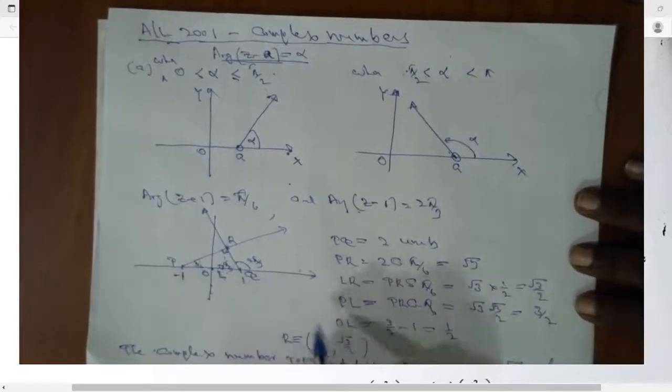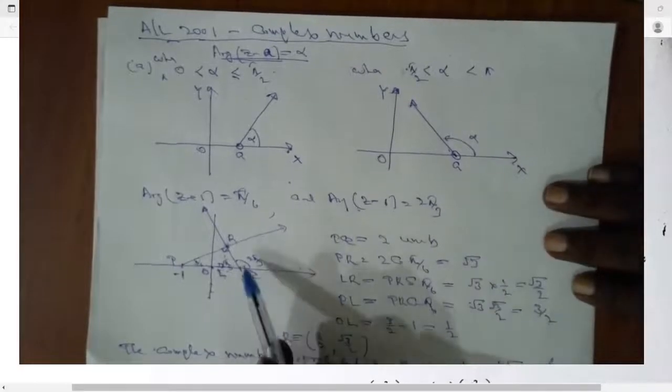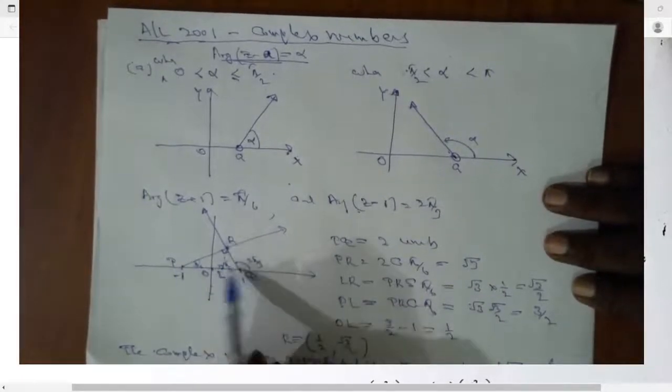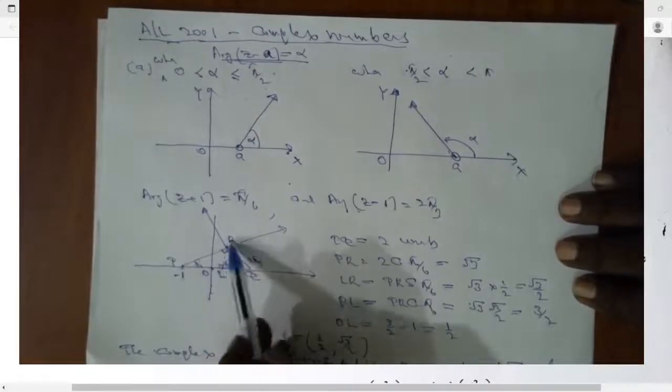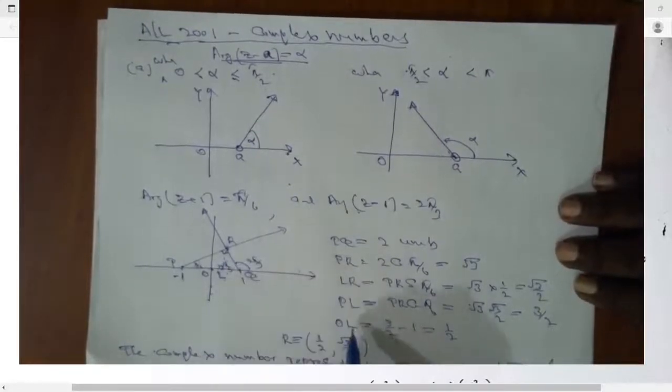Then you can, without just considering, you just calculate the length. Length, without considering the signs of this length. Then OL, then equals half.